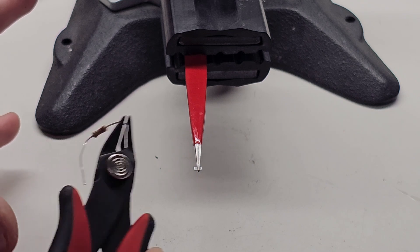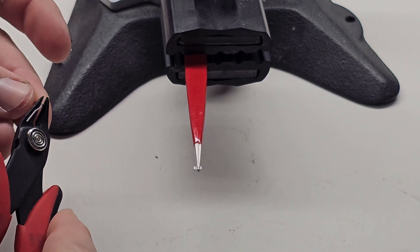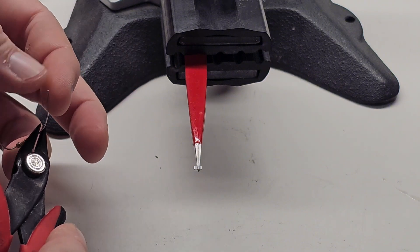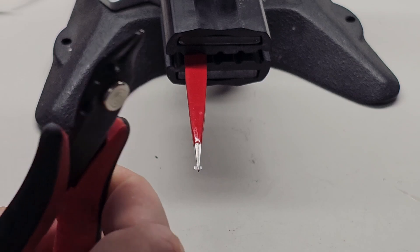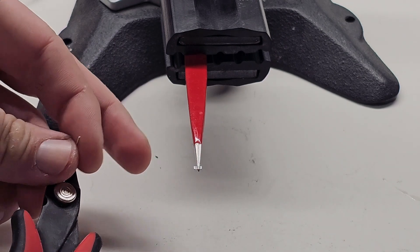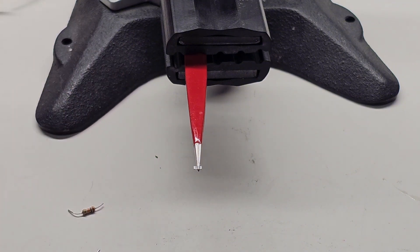One little tip when you're clipping legs off of a component so they don't go flying, grab one end like this and one end like this, like this, and so that way your leaves don't go flying. So put this end down, and then when you go to clip it, grab like that, and your leaves won't go flying. So let's get these soldered up.